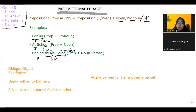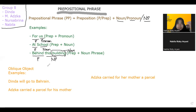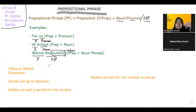There is also what is known as an oblique object, where there is an object or a complement in grammar. This actually makes the complement or the object itself function as a verb.